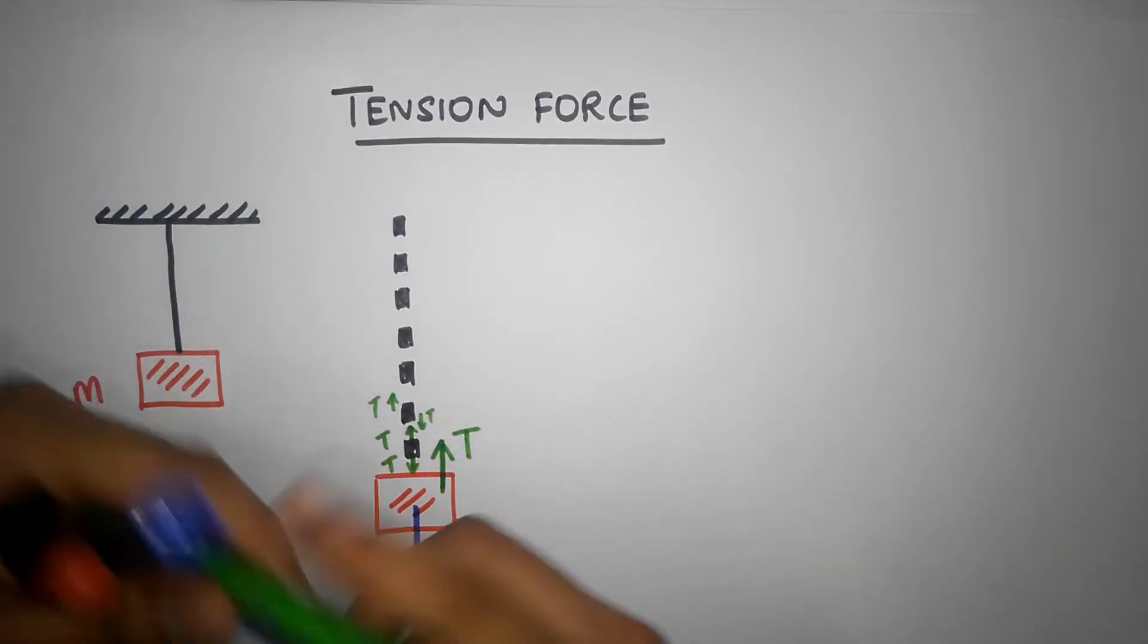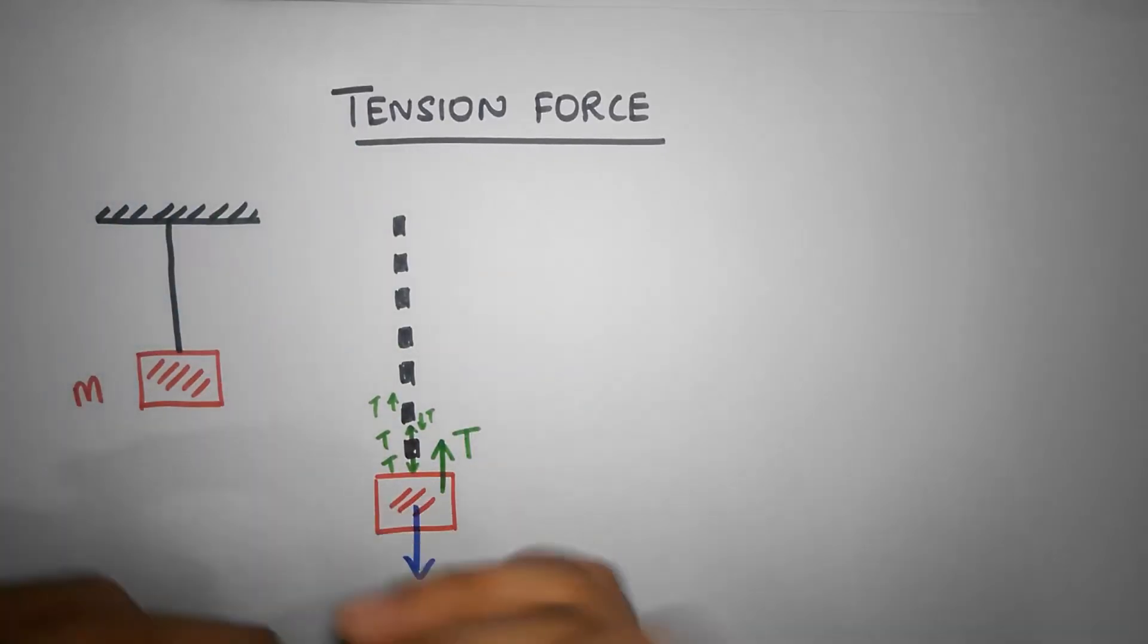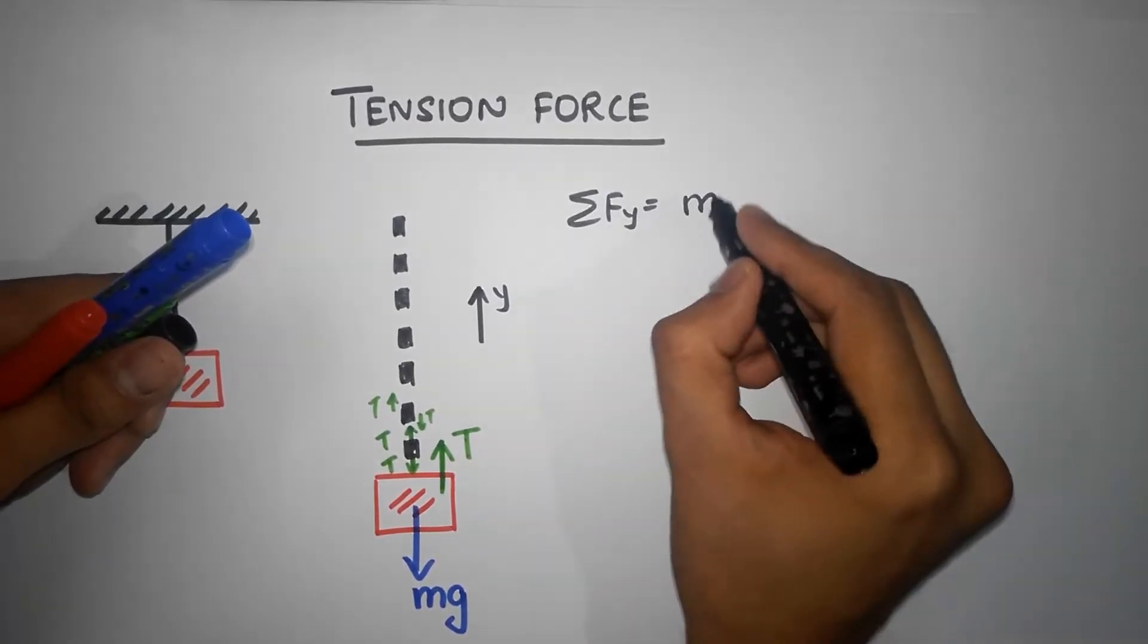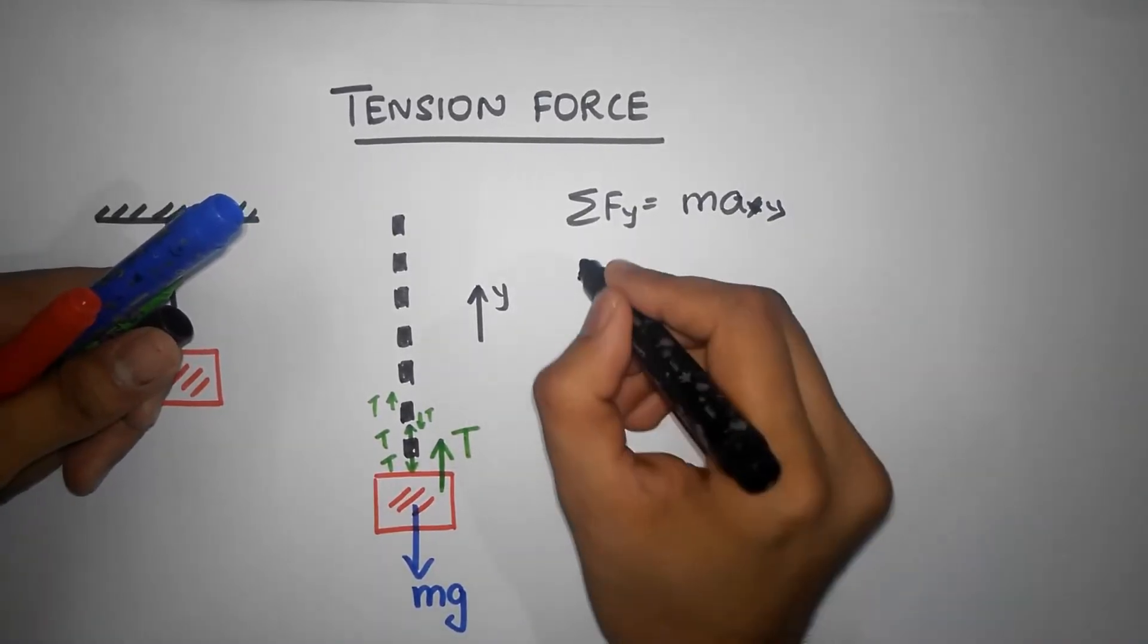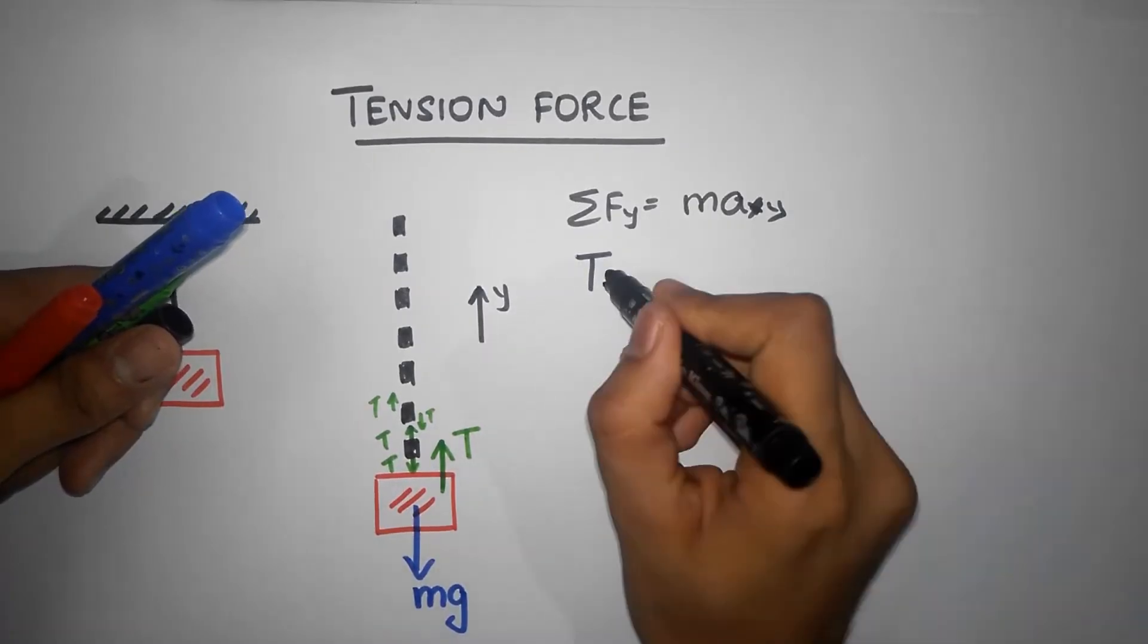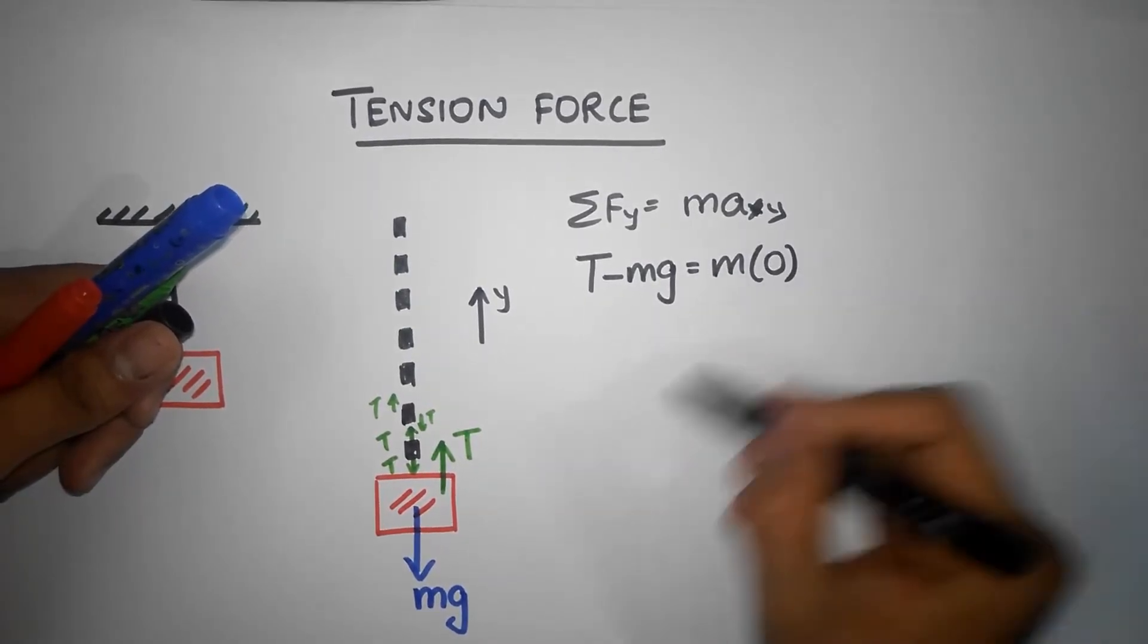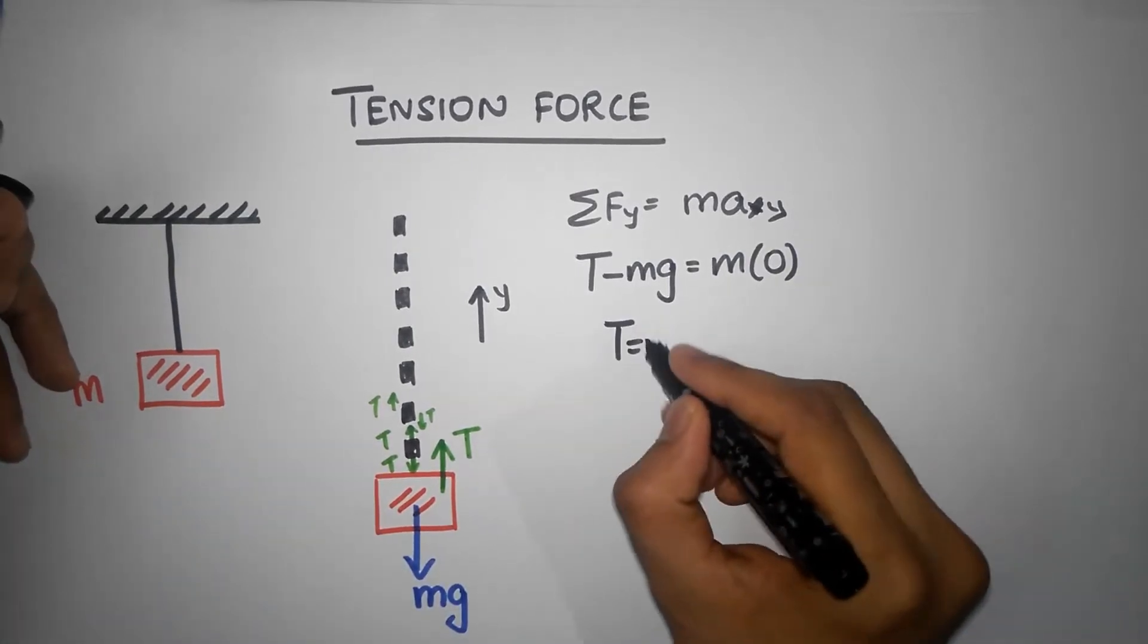We can now evaluate how much that force is supposed to be. Let's put F equals ma for this block. I'm going to call this as the y direction. I'm going to say Sigma f in the y should be equal to mass times the acceleration in the y direction. There are two forces: tension force acting upwards and mg acting downwards, so T minus mg equals ma. But there is no acceleration, so tension must be equal to mg.